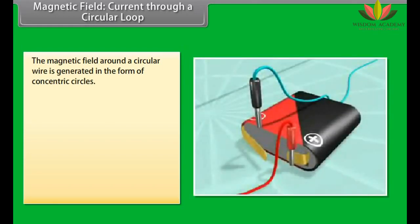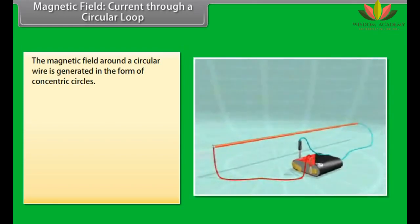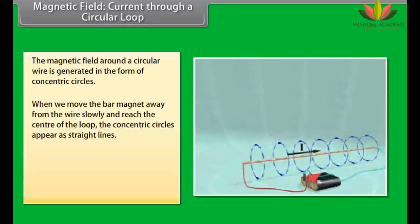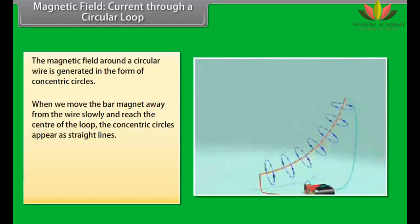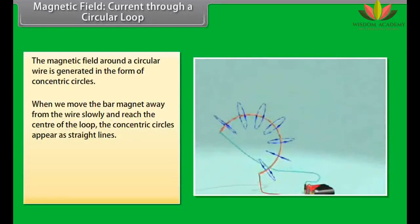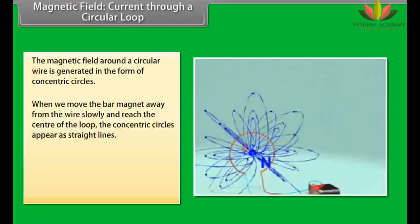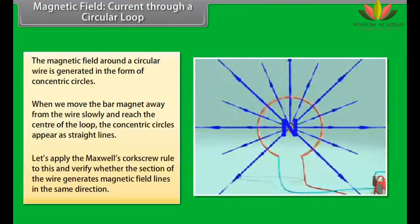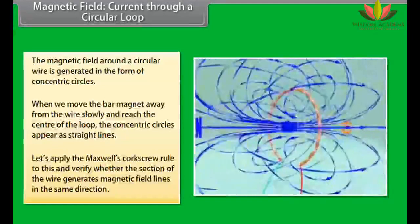Magnetic field current through a circular loop. Let us now look at what happens when the wire through which we passed the current is placed in a circular manner. The magnetic field around it is generated in the form of concentric circles. Try moving the bar magnet away from the wire slowly. By the time we reach the center of the loop, the concentric circles appear as straight lines. The entire magnetic field appears as a straight line. Now try applying Maxwell's Corkscrew rule to this and check whether every section of the wire is able to generate magnetic field lines in the same direction.